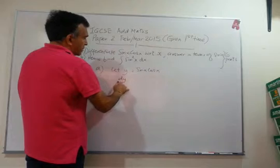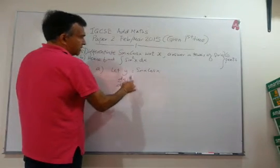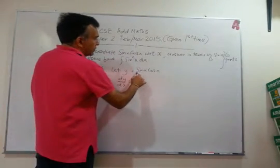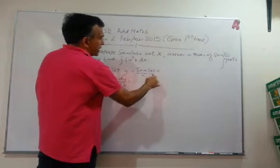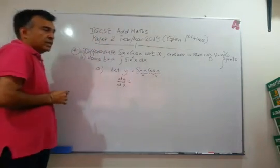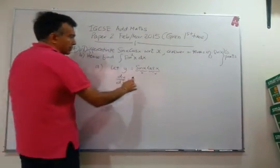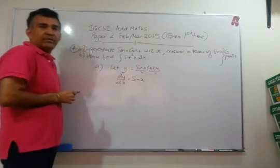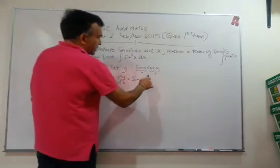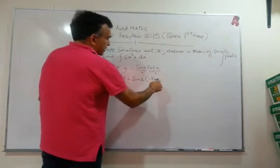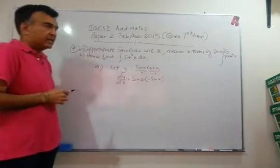So let y equals to sin x cos x. So we will use the product rule, or the U-V rule. This will be U and this will be V. So first write down U and we differentiate V. When you differentiate cos x, you will get minus sin x.